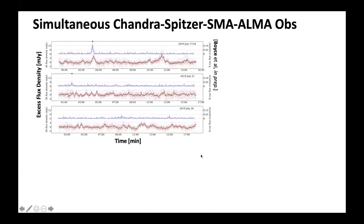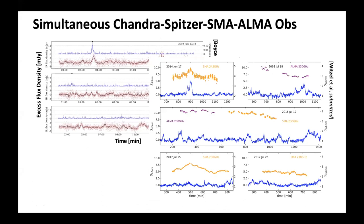We also have beautiful new data from a similar program in 2019. Gunter Witzel has very new work already on the archive, showing the SMA and ALMA light curves compared to Spitzer light curves in 2014, 2016, and 2017. These multi-wavelength campaigns are very challenging to coordinate, but they're starting to really pay dividends as we pull different datasets together and try to understand them as a whole.